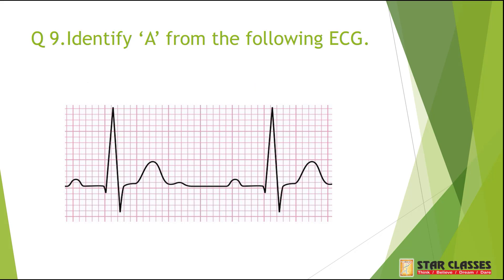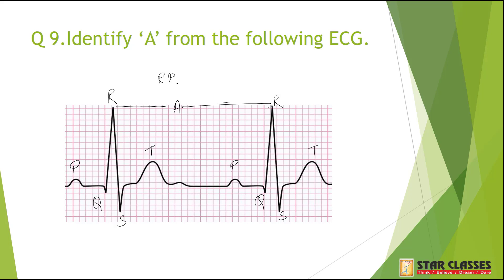Question 9: Identify A from the following ECG. The ECG shows a P wave, then Q, R, S complex, and then T wave. The highest raised part is R. The distance from one R to the next R is called the RR interval.